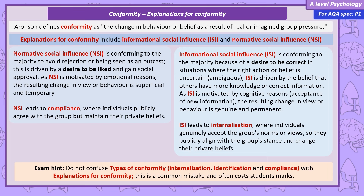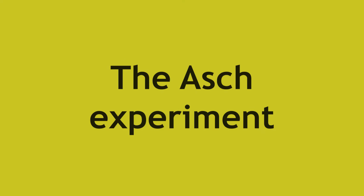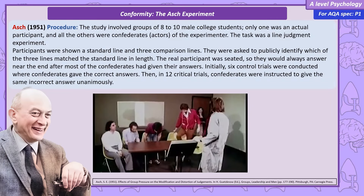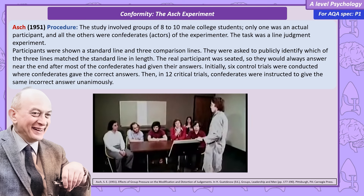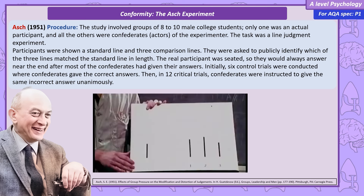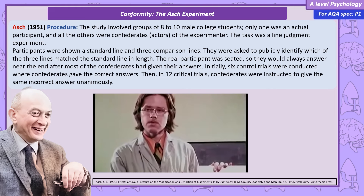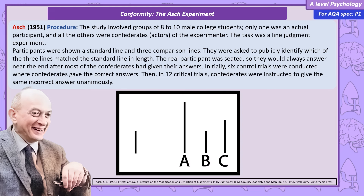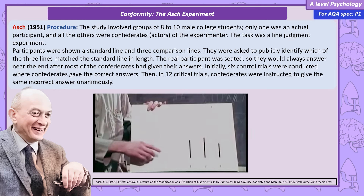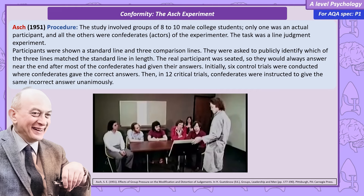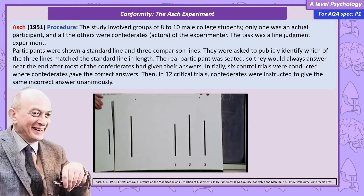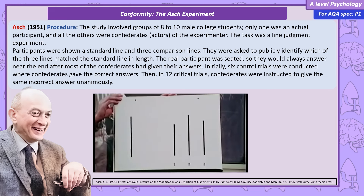In Asch's classic study of conformity he used groups of male students. Unknown to one real participant, all the other men around the table were actors — confederates — working on behalf of the experimenter. The real participant was told the task was about visual perception and had to identify the correct comparison line matching the standard line. There were 18 trials. Each man around the table took it in turns to say their response, with the real participant seated second to last. At first each confederate gave the correct answer, but in the final 12 critical trials the confederates all gave the same incorrect answer.